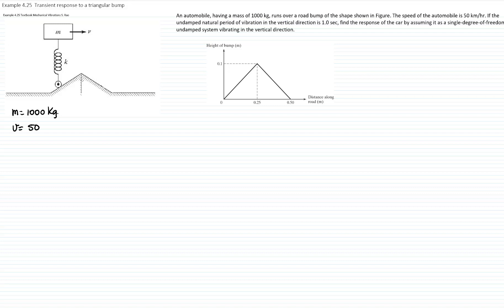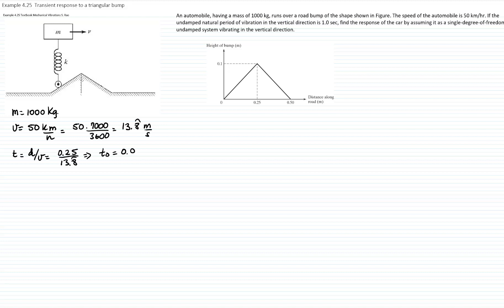Let's convert the velocity from km/h to m/s. Multiplying by 1,000 and dividing by 3,600 gives a velocity of 13.8 m/s. The distance to the first half of the bump is 0.25 meters, so dividing by 13.8 m/s gives a time of 0.018 seconds to cover the first half of the bump.